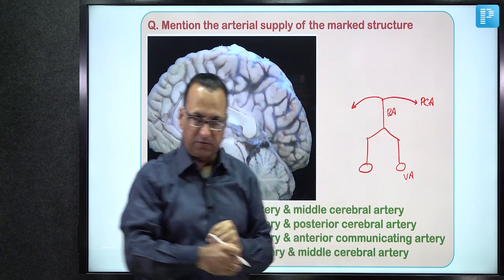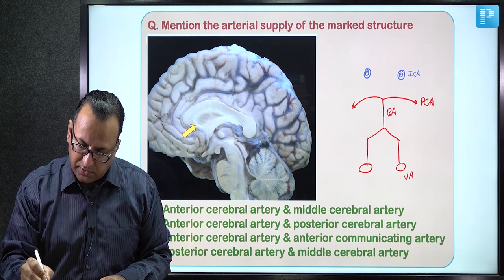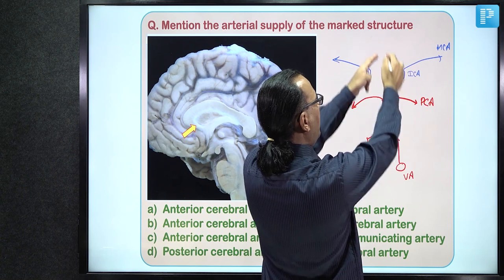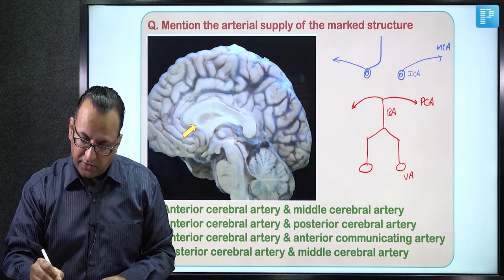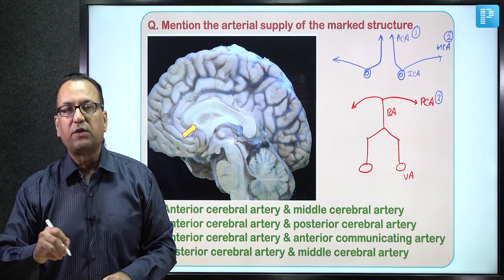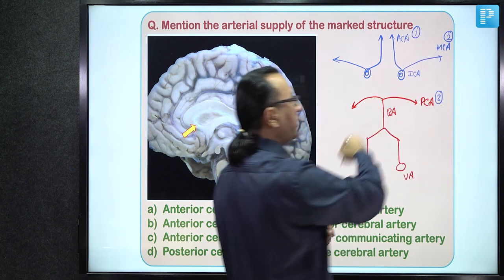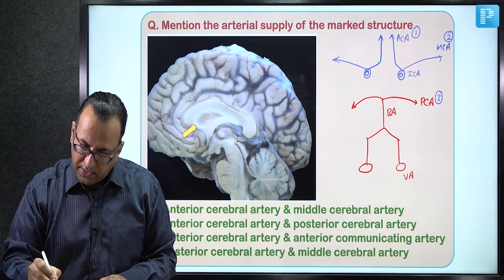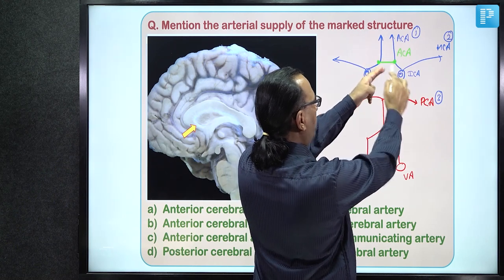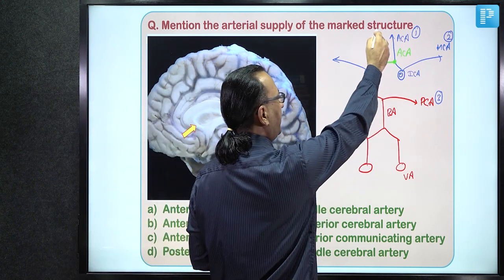The anterior and middle cerebral arteries are contributed by the internal carotid artery system. The internal carotid artery gives the middle cerebral artery and the anterior cerebral artery on either side. All three cerebral arteries — anterior, middle, and posterior — supply the corpus callosum, along with the anterior communicating artery, which connects the two anterior cerebral arteries.